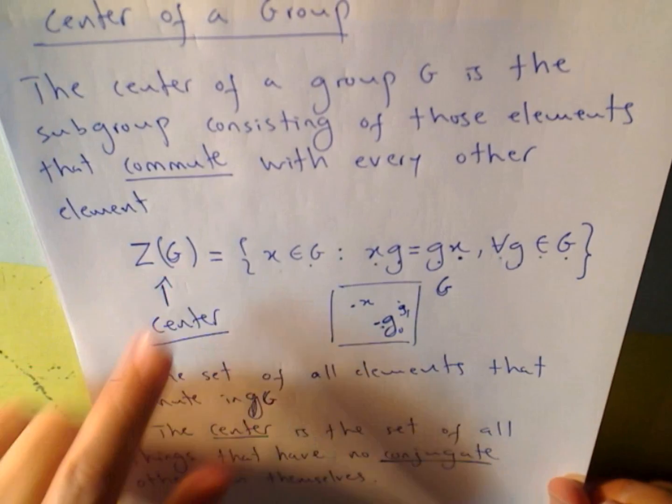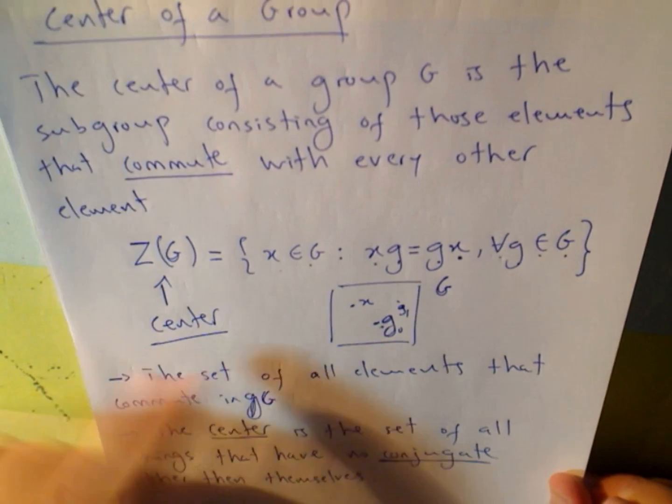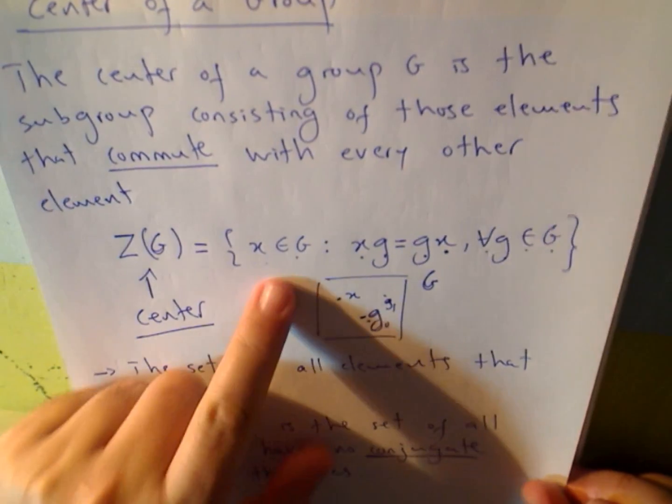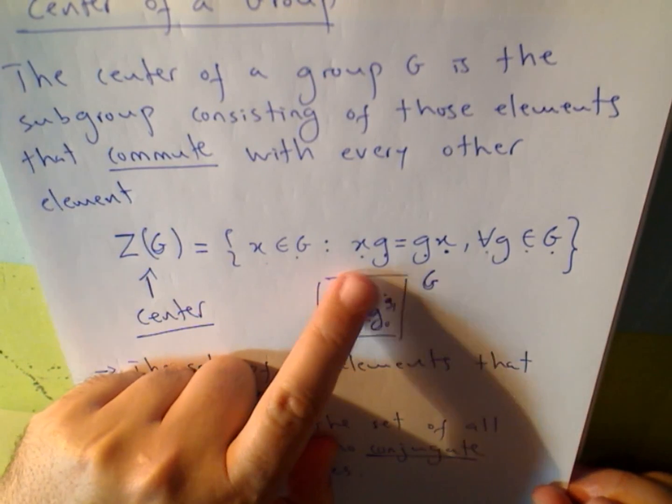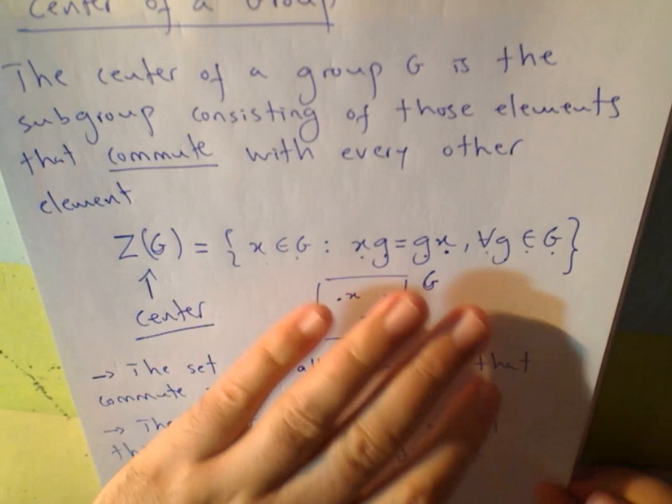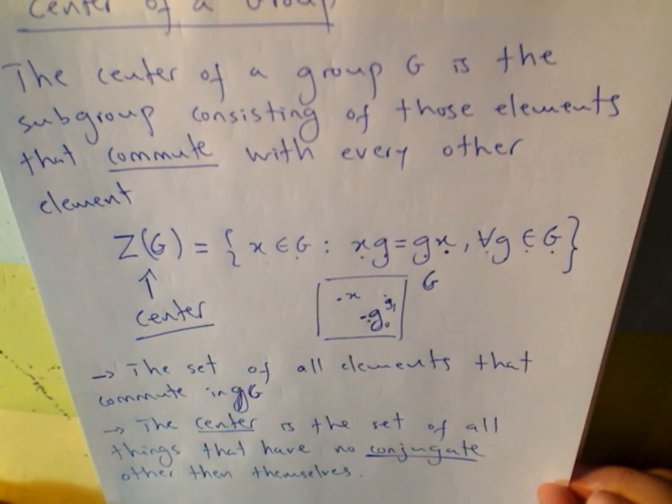So, Z of G, the center of the group, X in G, such that X times G equals G times X, for all G, all element G in G. Now I'm going to give a couple of examples, quick examples, of course.